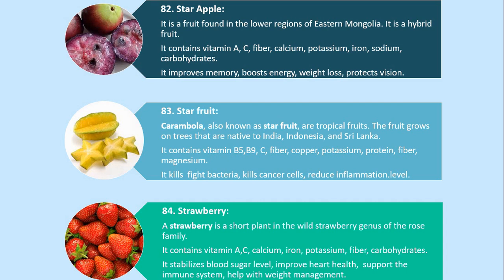Number 84. Strawberry. A strawberry is a short plant in the wild strawberry genus of the rose family. It contains vitamin A, C, calcium, iron, potassium, fiber and carbohydrates. It stabilizes blood sugar level, improves heart health, supports the immune system, and helps with weight management.